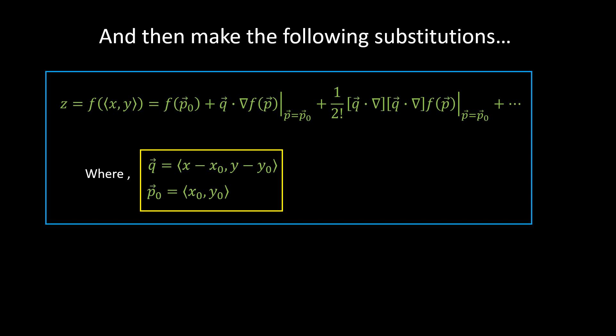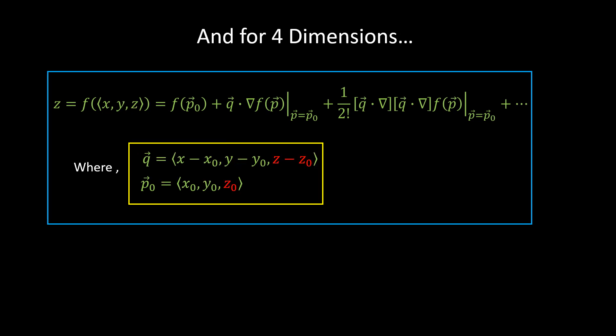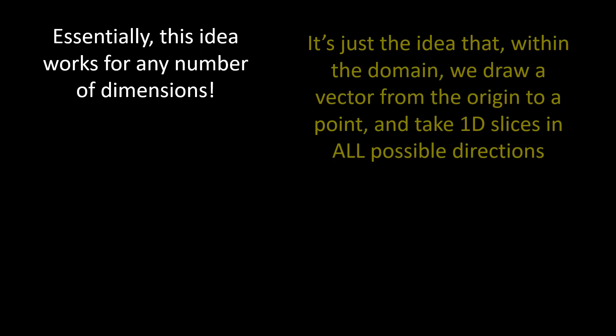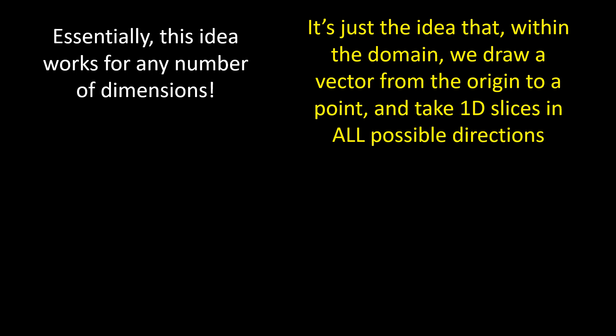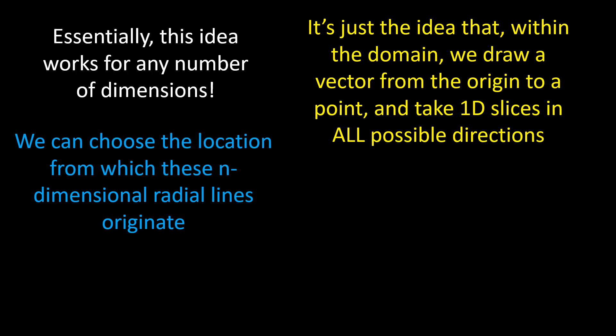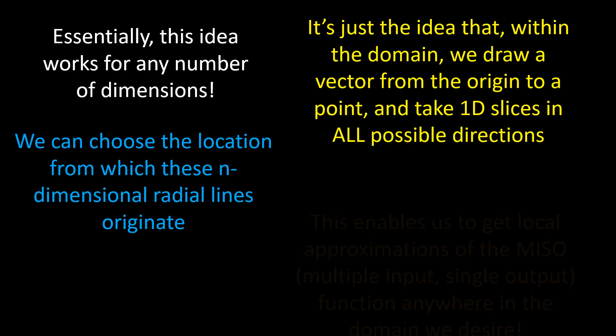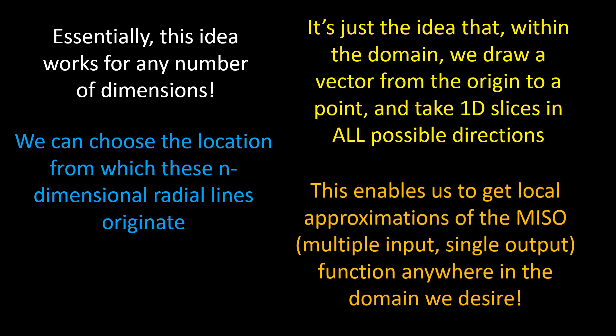There's the multivariable Taylor series expansion up to the third term. For the rest of the terms we just follow that same pattern. For a three-dimensional domain — four dimensions in total — we add those red terms. This idea works for any number of dimensions: within the domain we draw a vector from the origin to a point and take 1D slices in all possible directions. The q direction vector is a function of x and y, so it spans all possible directions and points. We can choose the origin of these n-dimensional radial lines with the p₀ vector, enabling local approximations of a MISO (multiple input single output) function anywhere in the domain.